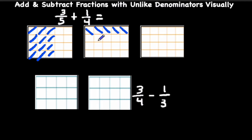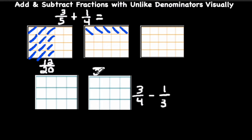Now we're going to look at this area model and determine what it represents as a fraction. The shaded region for 3 fifths gives us 3, 6, 9, 12 — that's 12 out of 20 sections, because 5 times 4 is 20. We have a total of 5, 10, 15, 20 sections. The second fraction also has a denominator of 20, and there are 1, 2, 3, 4, 5 — so that's 5 out of 20.